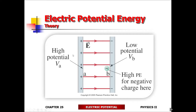VA — this is the potential of the positive charge plate. Notice that it says high potential for this one, and for the negative charge plate it says low potential. What does that even mean? Why is it that this is high potential and this is low potential? What's the meaning of potential?